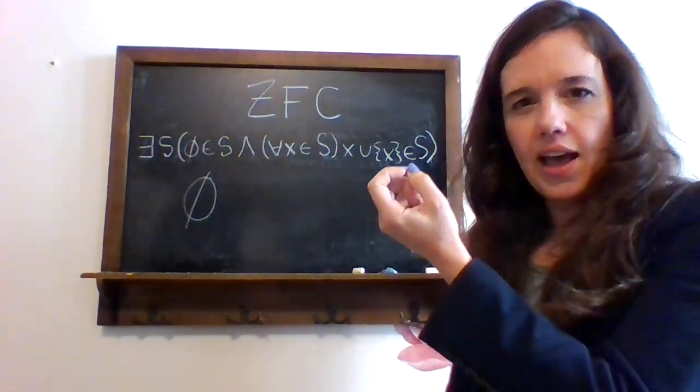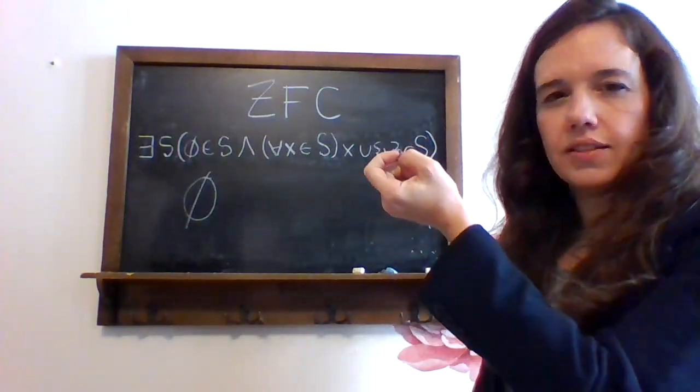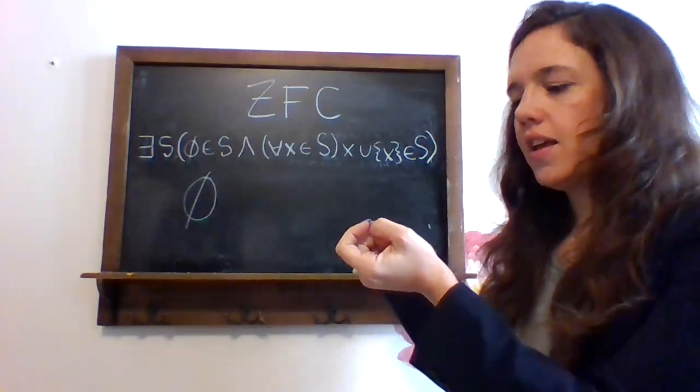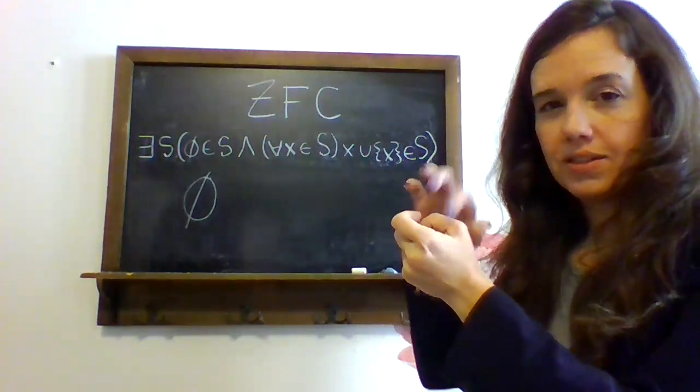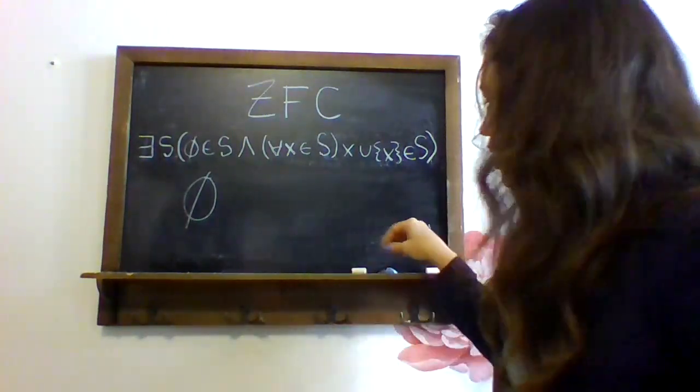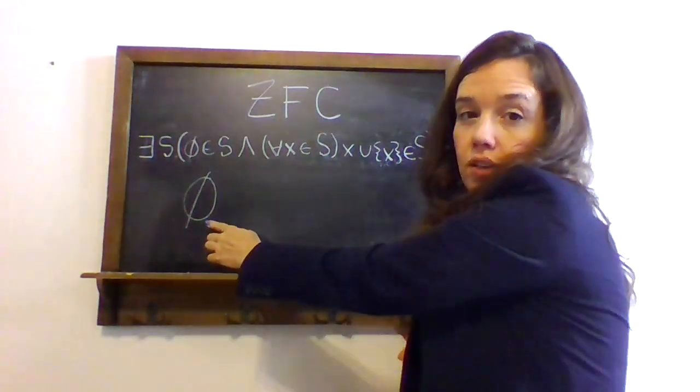So this says, if I have an element of S, then there's an element of S that has all the elements of this set and the set itself. So using the empty set, I can generate a new element of S.